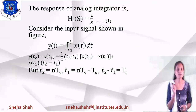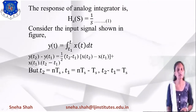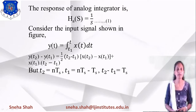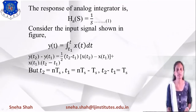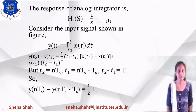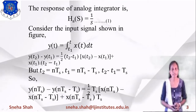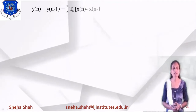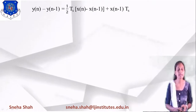Substituting these values, the equation becomes: y(nTs) - y(nTs-Ts) = (Ts/2)[x(nTs) - x(nTs-Ts)] + x(nTs-Ts)·Ts. At unit sampling time with Ts = 1, this simplifies to: y(n) - y(n-1) = (Ts/2)[x(n) - x(n-1)] + x(n-1)·Ts. Now, for a discrete-time signal we take the Z-transform.